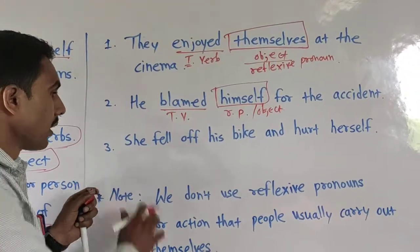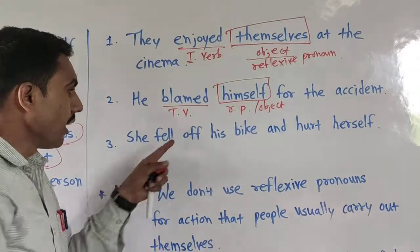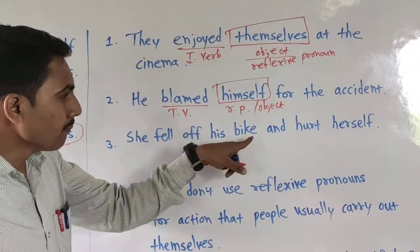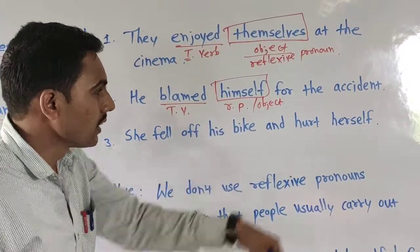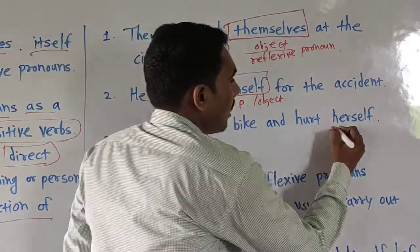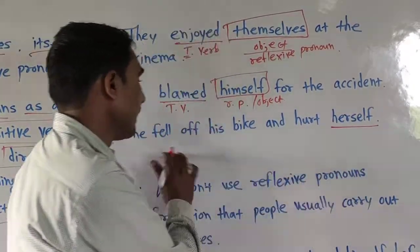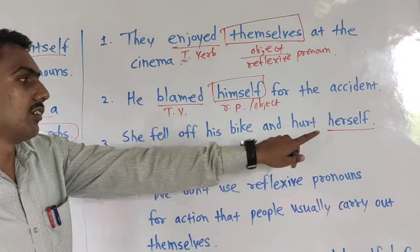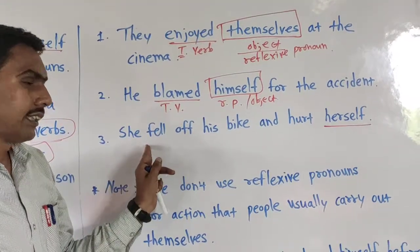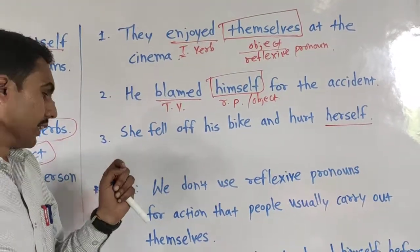Next example: She fell off her bike and hurt herself. In this example, 'herself' is used as an object.